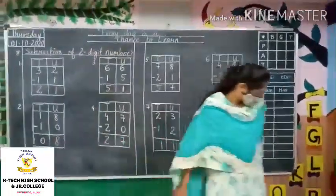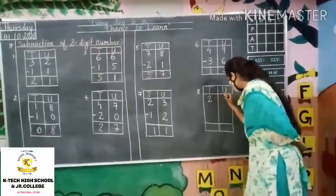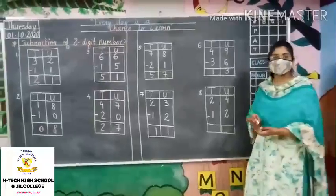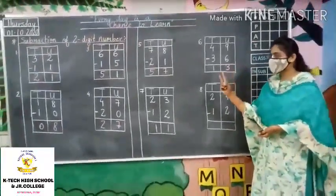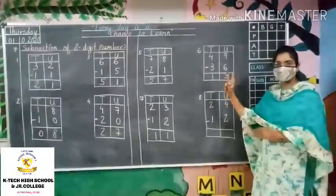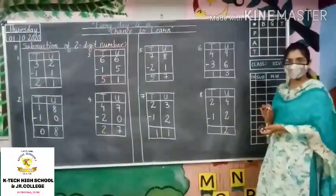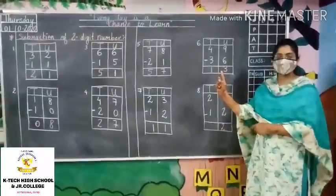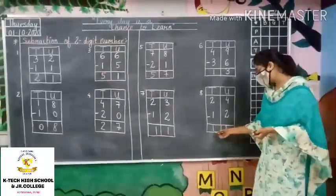Next question: 24 minus 12. Again use the same trick. Start with units: 4 minus 2. Remove 4 fingers — 1, 2, 3 and 4. Remove 2 fingers from them — 1 and 2. How many fingers are remaining? 1 and 2. So the answer is 2. Next tens: 2 minus 1. Remove 2 fingers, minus 1 finger — how many are remaining? 1. Therefore the answer is 12.